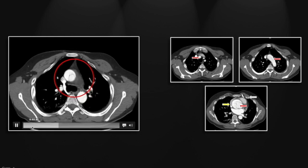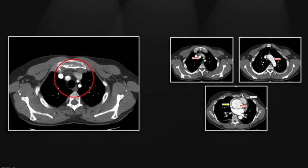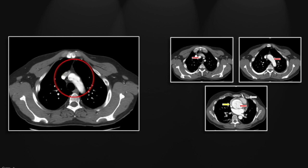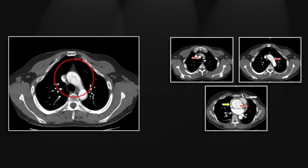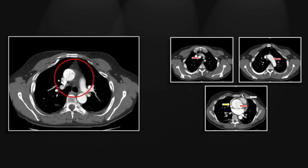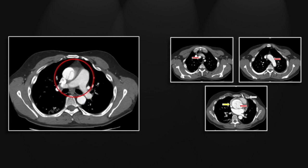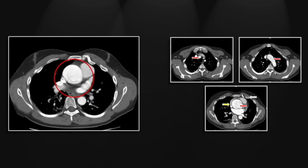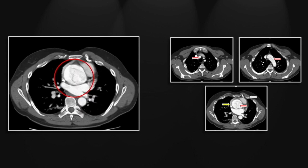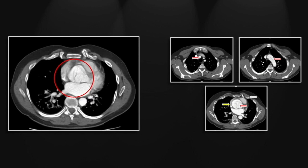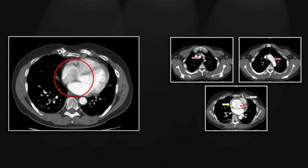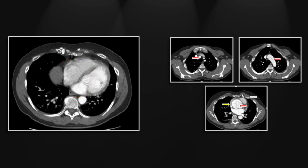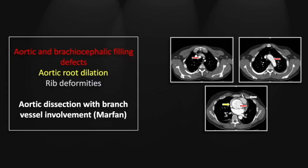There is a very nice example of the branch vessel involvement extending up into the great vessel origins and all the way down into the aortic root. The dilation is predominantly in the region of the aortic root and does not extend significantly up the ascending aorta. Note again that rib deformity, almost certainly associated with Marfan syndrome. So that is an aortic dissection with branch vessel involvement in Marfan syndrome.